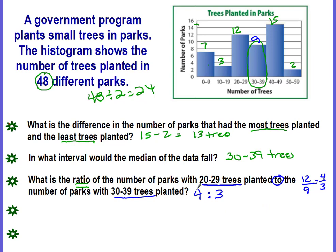Which means that for every 4 trees planted, there were 3 trees planted in the other park.